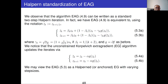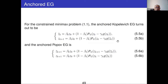Comparing their EAG with Korpelevich's EG in the unconstrained case, we find that EAG (formula 5.3) is actually just the Halpern version of Korpelevich's EG — you have the anchor, then you make a convex combination. So we can view EAG as an anchored Korpelevich EG. Correspondingly, you also have an anchored Popov's EG. But convergence of these algorithms has not yet been fully discussed.